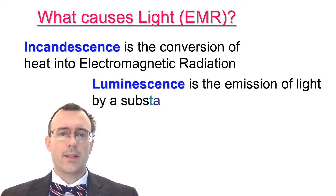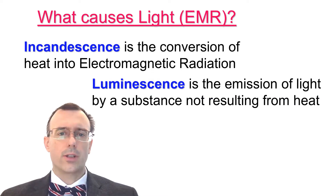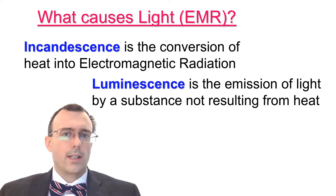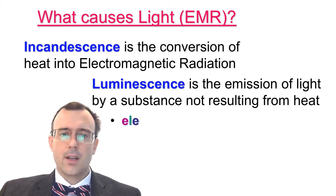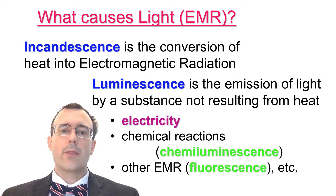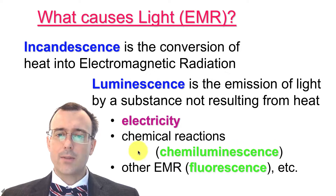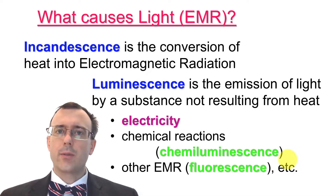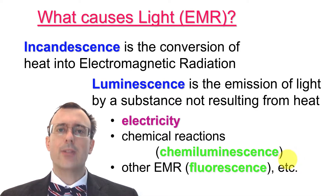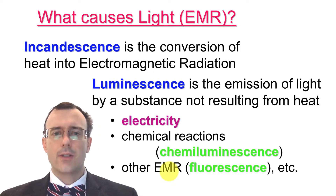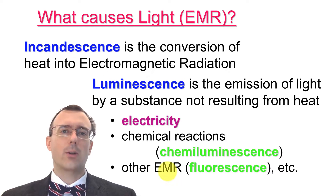In addition to incandescence, you also have luminescence, which is a catch-all term for the emission of light by a substance not resulting from heat. There are various types: energy can come from electricity or chemical reactions — if from chemical reactions, that's called chemiluminescence, found in things like glow sticks. In animals, it's called bioluminescence. If the energy comes from other types of electromagnetic radiation, that's called fluorescence or phosphorescence.